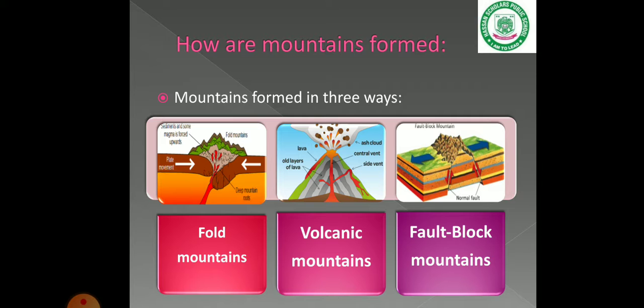Next are fault-block mountains. When two blocks of the earth's crust are pushed apart and repel each other, they are thrust upward from the ground. These are the three ways in which mountains are formed.